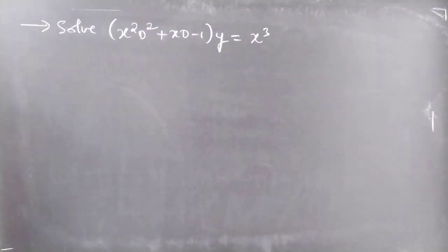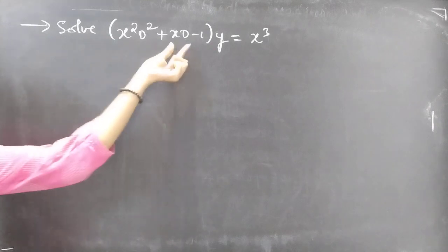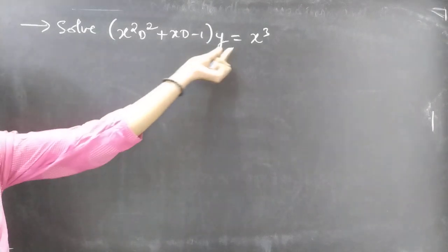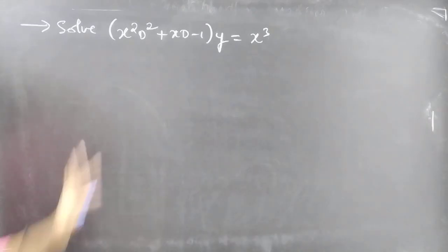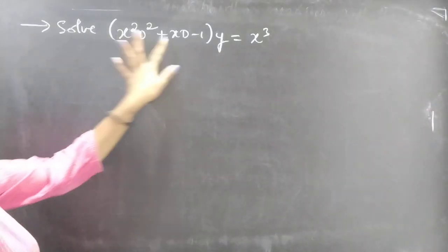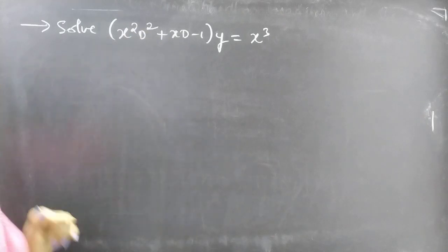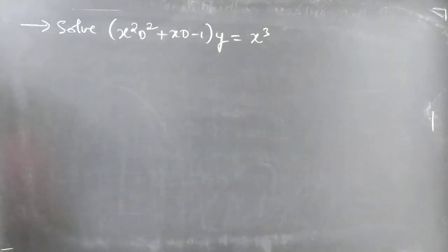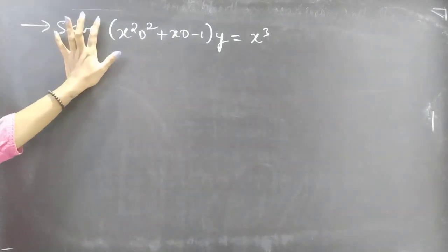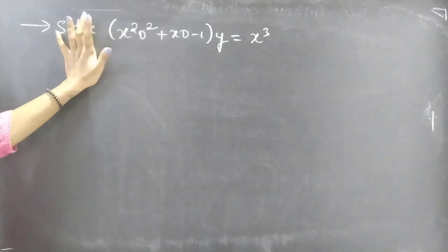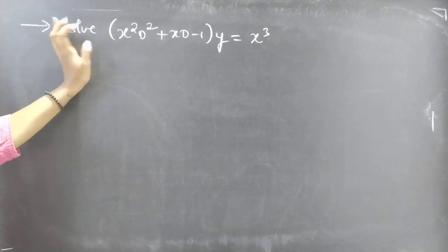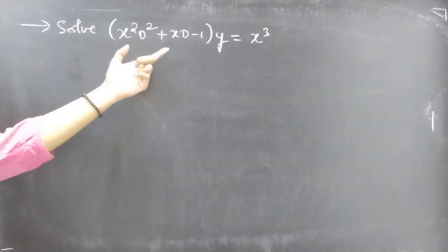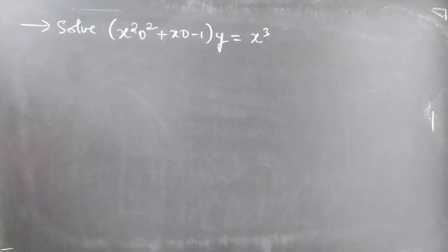The problem: solve x²d²y + xdy − y = x³. So we are given a differential equation with variable coefficients. We are going to reduce this given differential equation to one with constant coefficients by making some substitution. This is a Cauchy's equation.